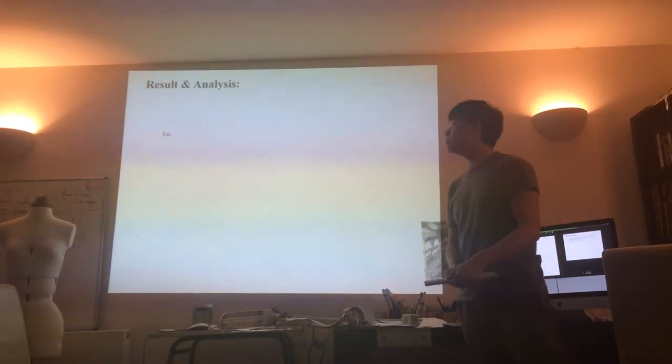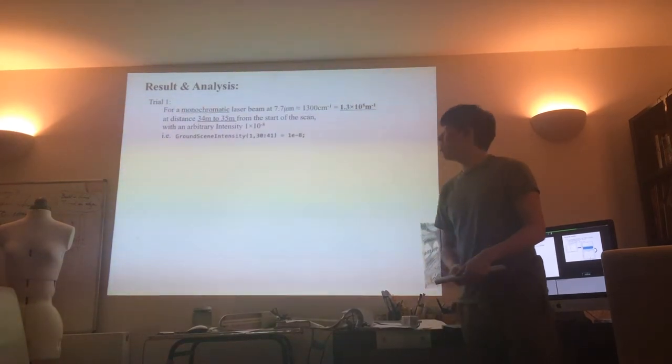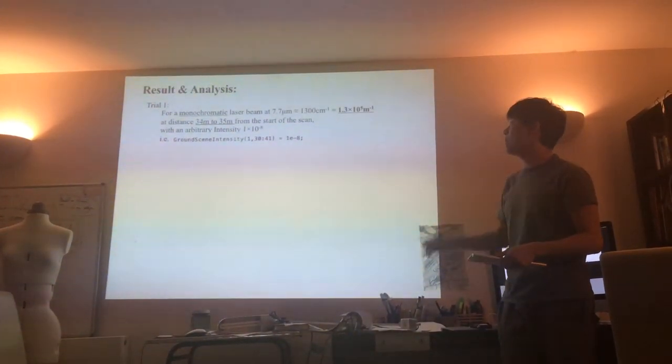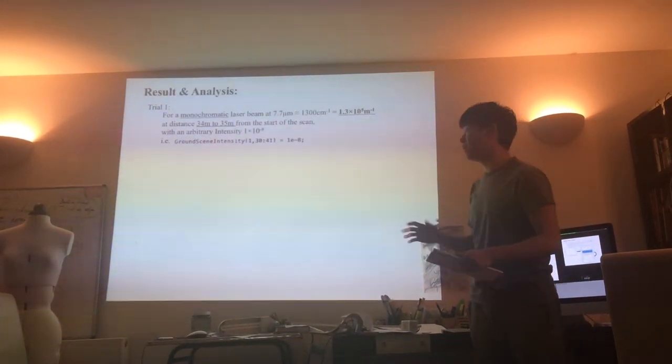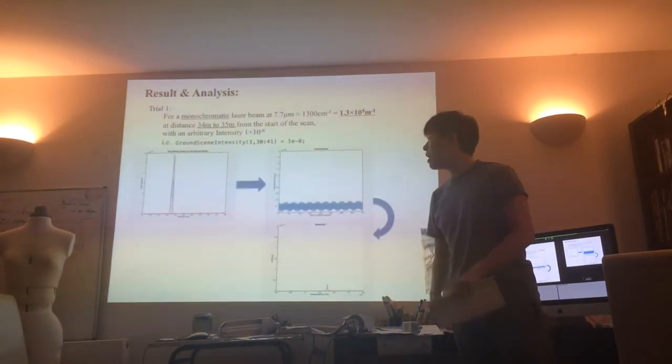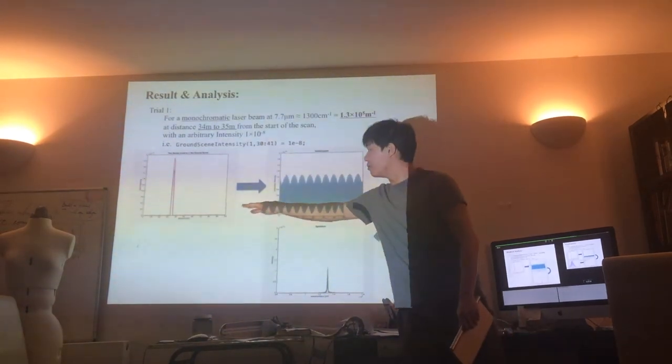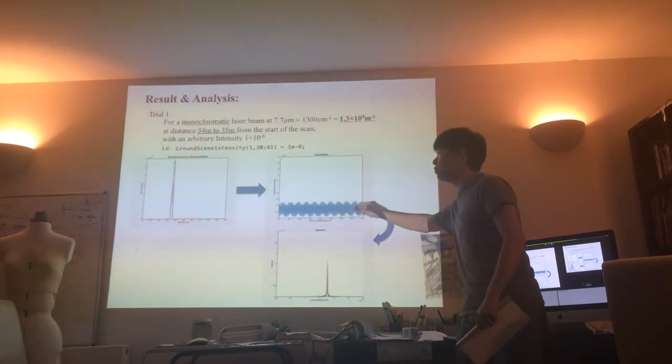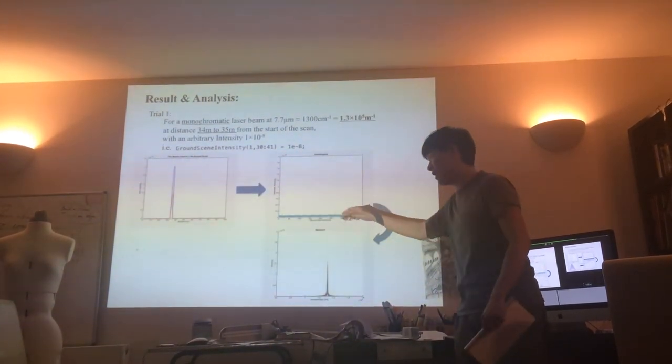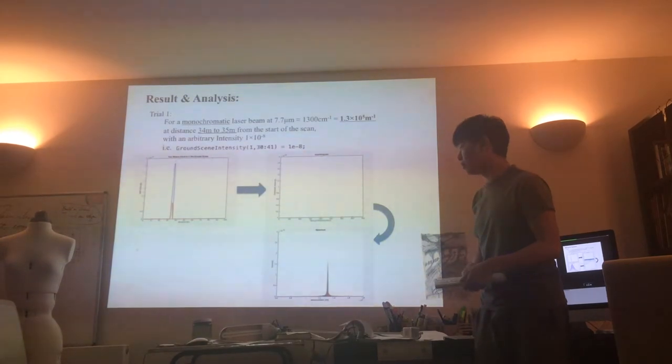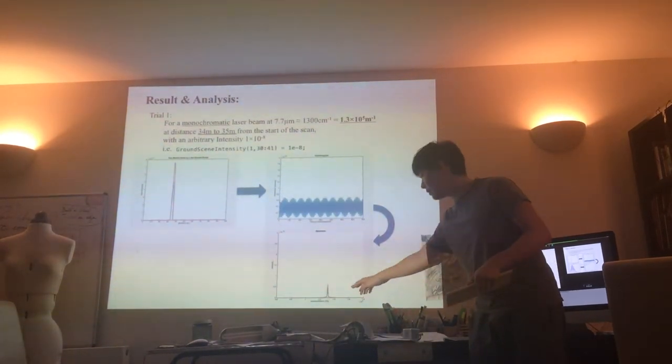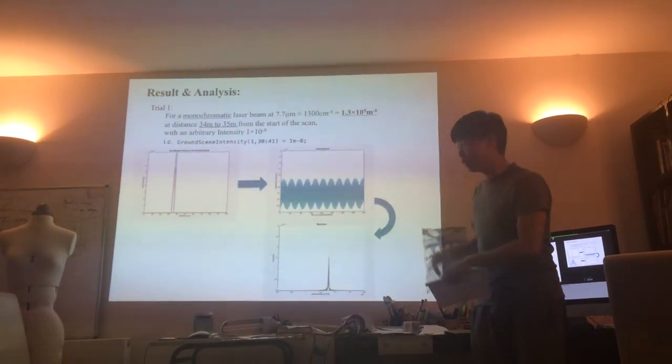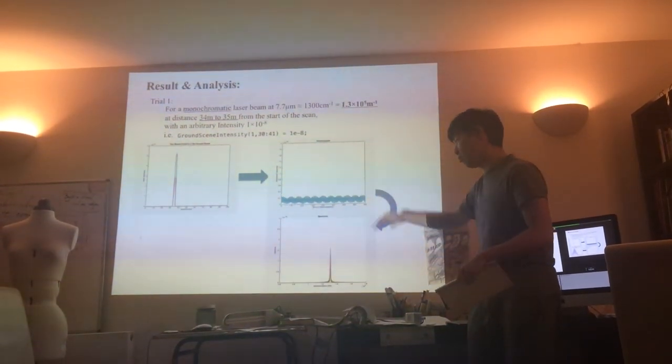Now, coming to the results. For the first trial, we do a monochromatic laser at 7.7 microns that translates to 1.3×10^5 per meter. This is my two beams scanning, and this is my interferometer as it goes through the heat point, this amplitude increases. This is the spectrum being overplotted each other as my telescope moves.